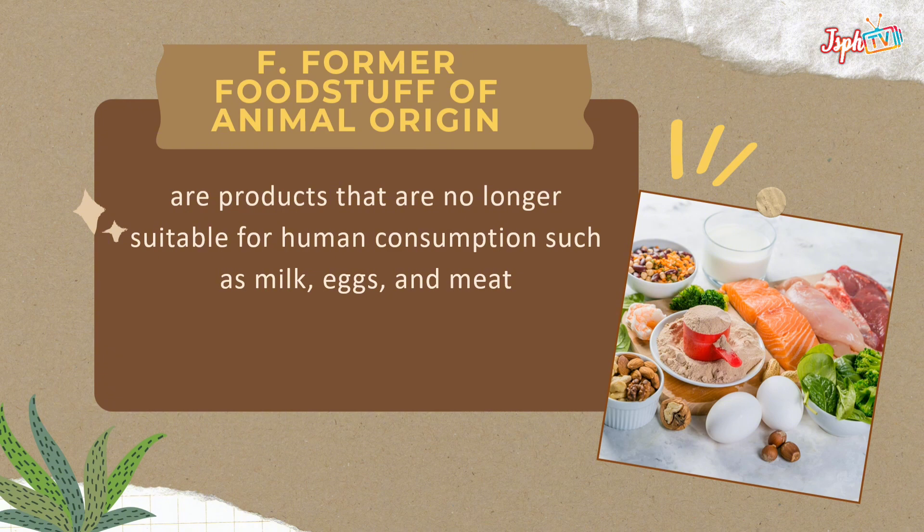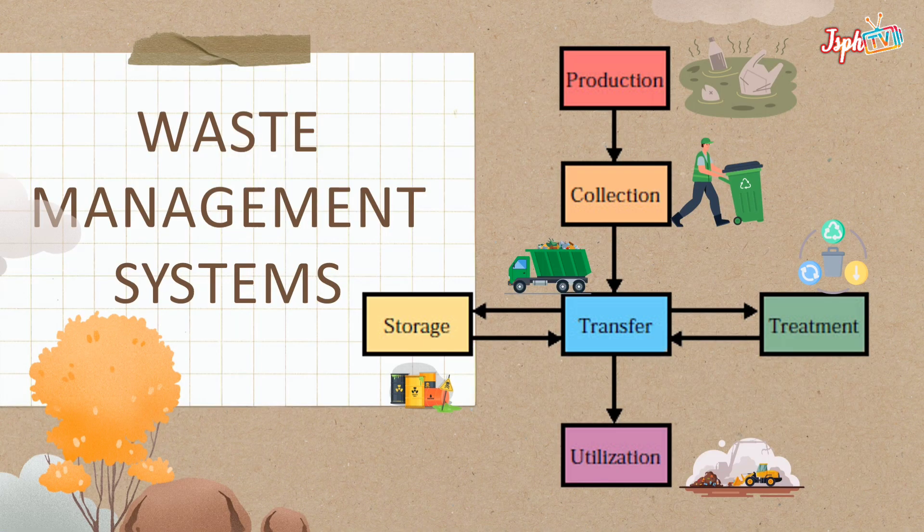Former foodstuff of animal origin are products that are no longer suitable for human consumption, such as milk, eggs, and meat.